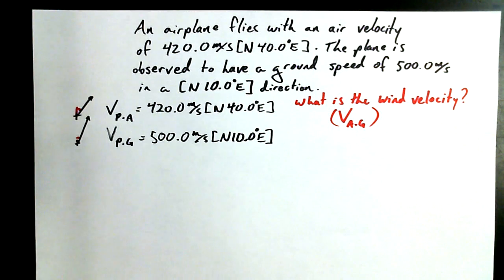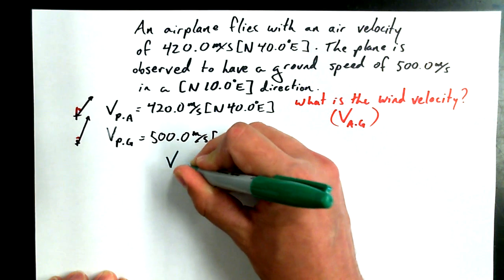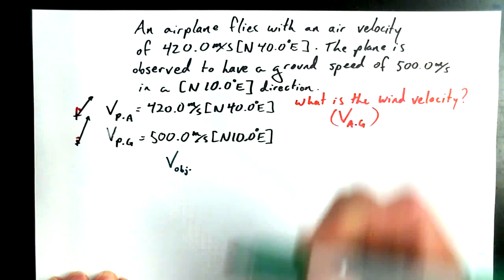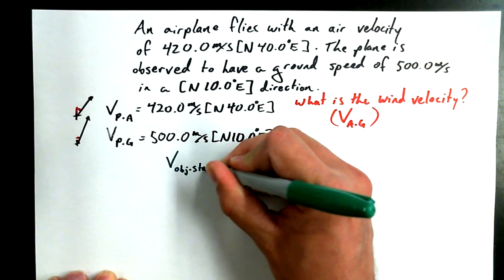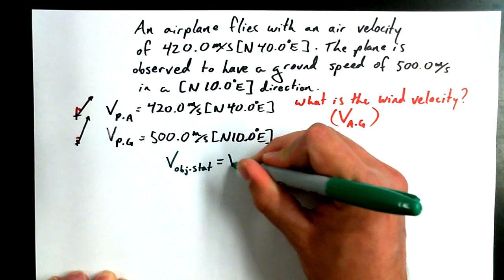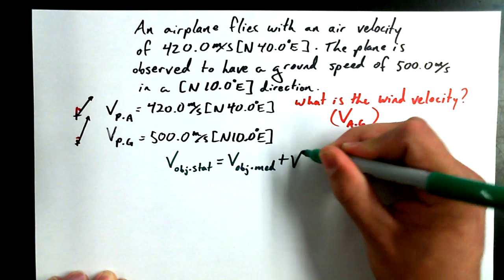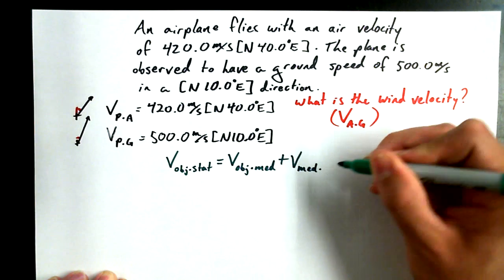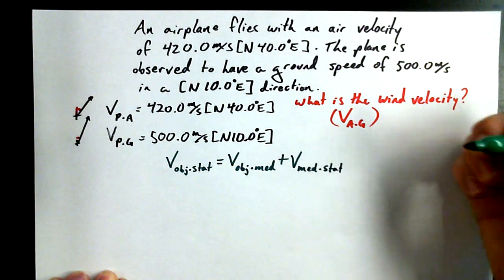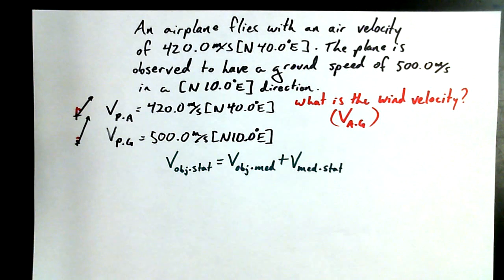Now, once upon a time, we made a statement something like this. We said that, in general, any time you have an object moving in a medium, where the medium is also in motion, we could set up a vector equation. The velocity of an object relative to a stationary reference is equal to the velocity of the object relative to the medium in which that object is found, plus the velocity of the medium with respect to the stationary reference.